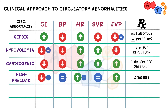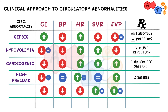The fifth circulatory abnormality: the key here is the discordant heart rate that does not respond to low blood pressure. These patients have a problem with their conduction system and would therefore likely benefit from pacing to increase their heart rate.